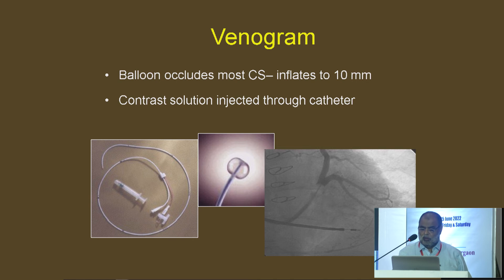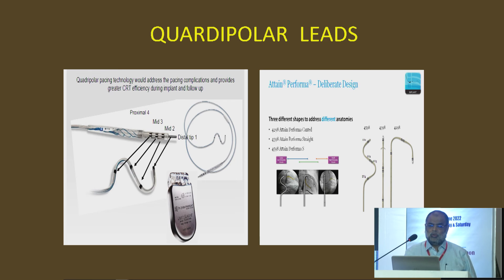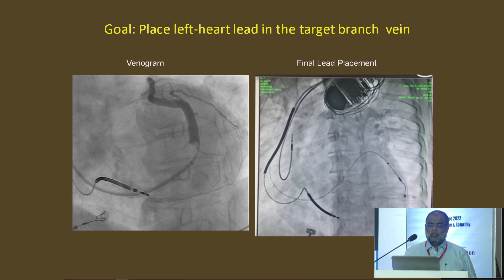The target vein is the lateral vein, not the middle cardiac vein. The LV leads initially were bipolar; now we have the quadrupolar lead to improve responder rate. Medtronic has three shapes — straight, S-shape, and curve shape — for the LV lead. After the venogram, we put the lead in the coronary sinus and then deliver the LV lead. So there is an LV lead, RV lead, and RA lead — this is the complete procedure.